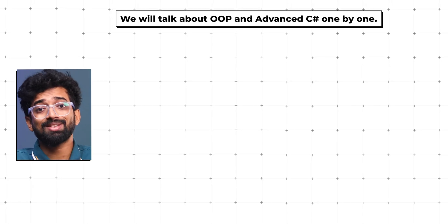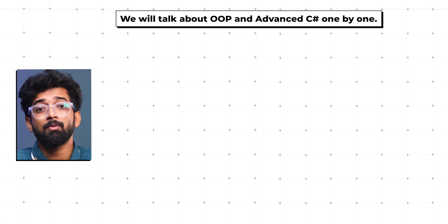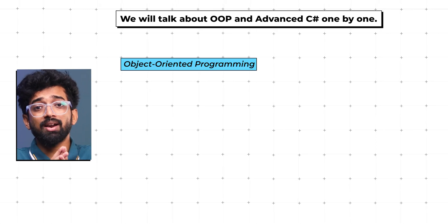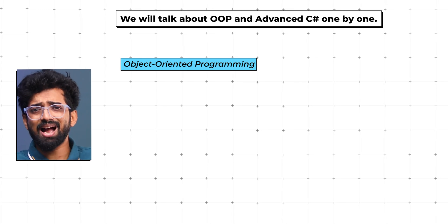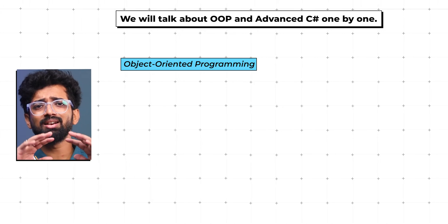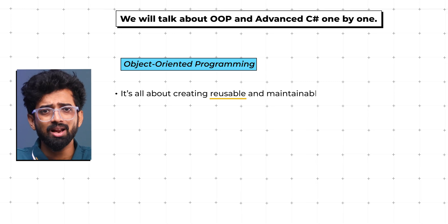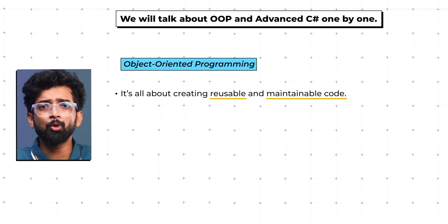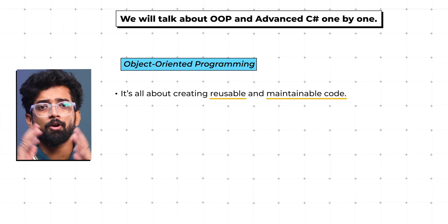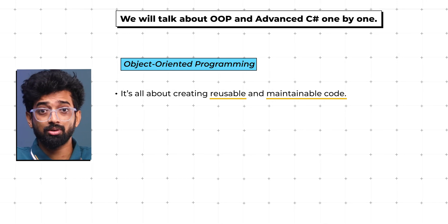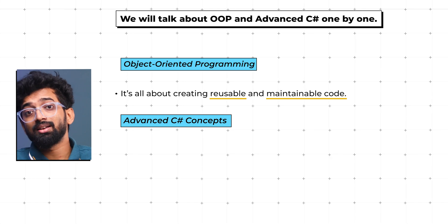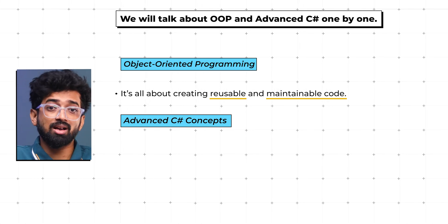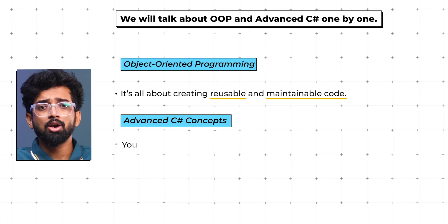Now we'll talk about OOP and advanced C#. This is where C# really shines. You'll be working with classes and objects, understanding access modifiers, and working with inheritance. It's all about creating reusable and maintainable code. Think of OOP as your blueprint for organizing and structuring your application.